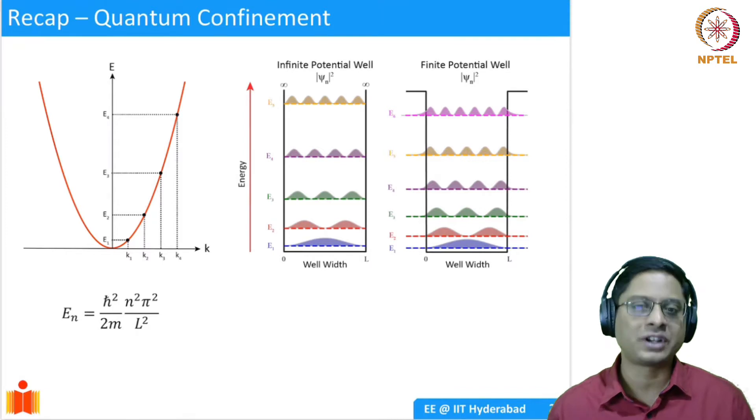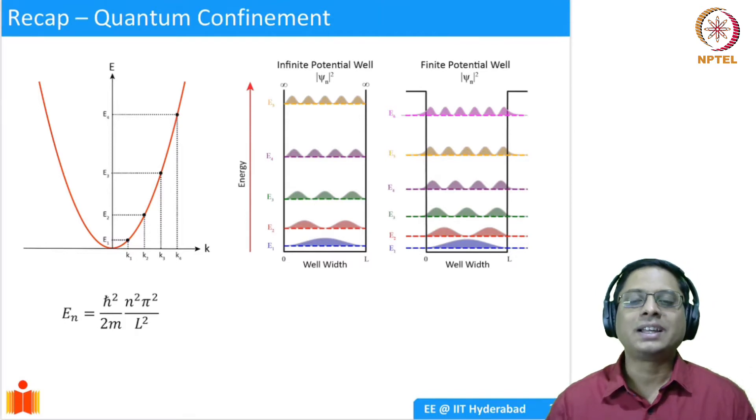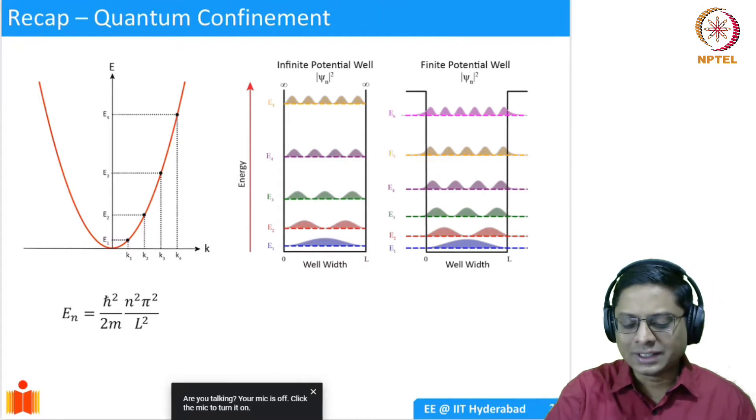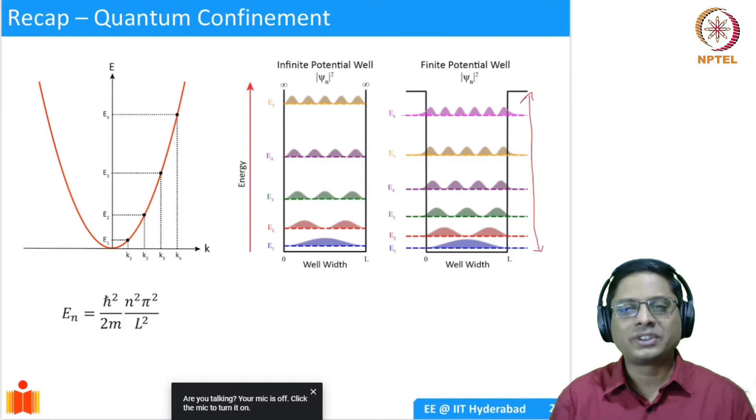Corresponding to each of those states, you have a wave function. The mod of psi squared gives you the probability of finding an electron. So for various energy levels or energy states, you have different probability distributions. Then we said that an infinite potential well, while it is a simple problem to solve analytically, may not be accurate. We wanted to understand how a finite potential well behaves.